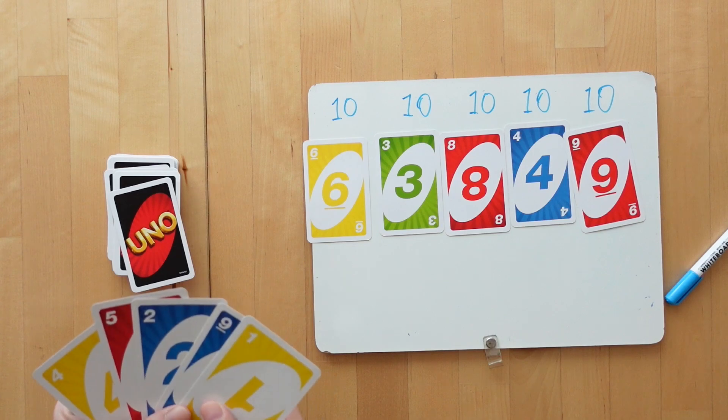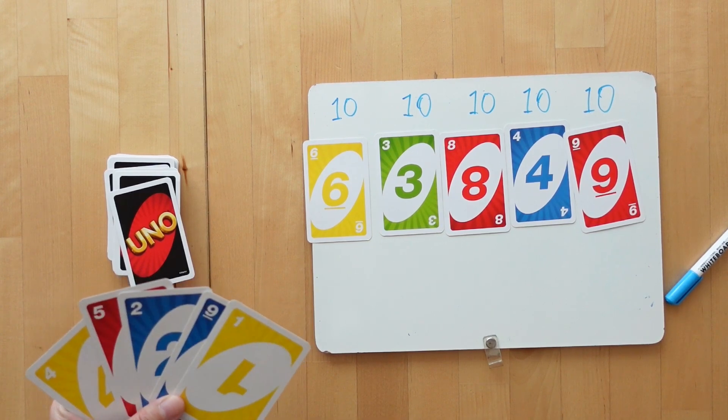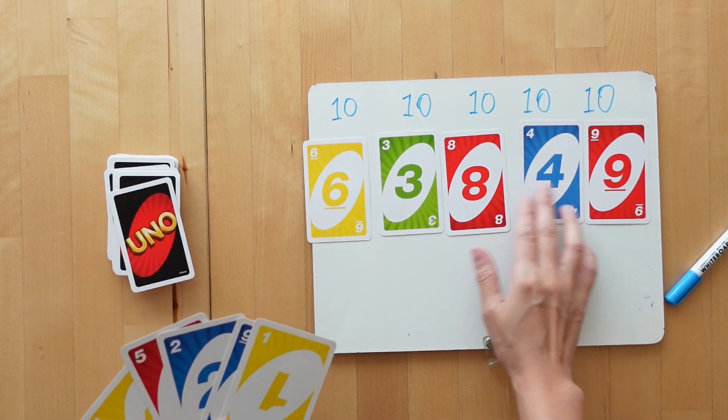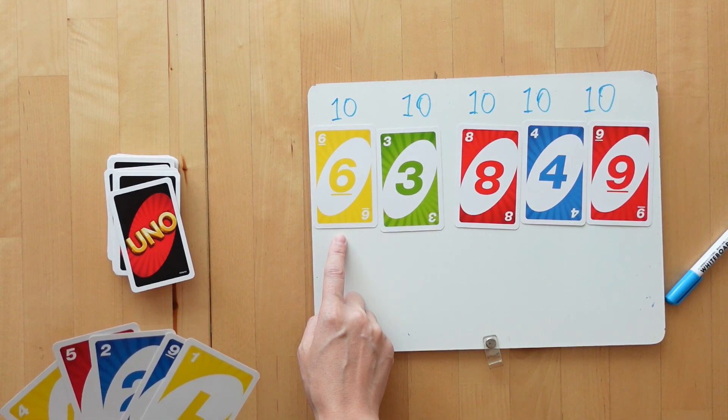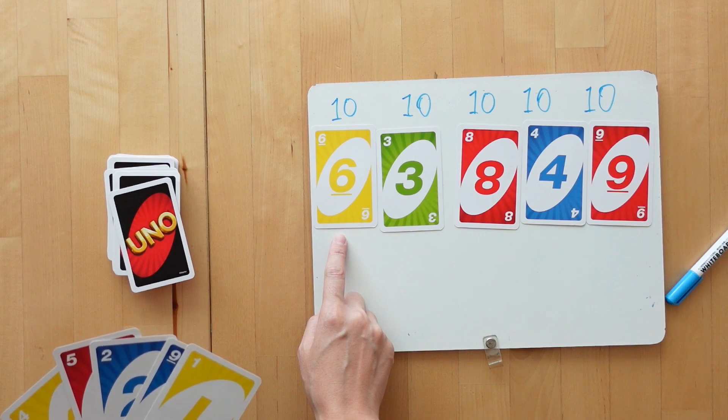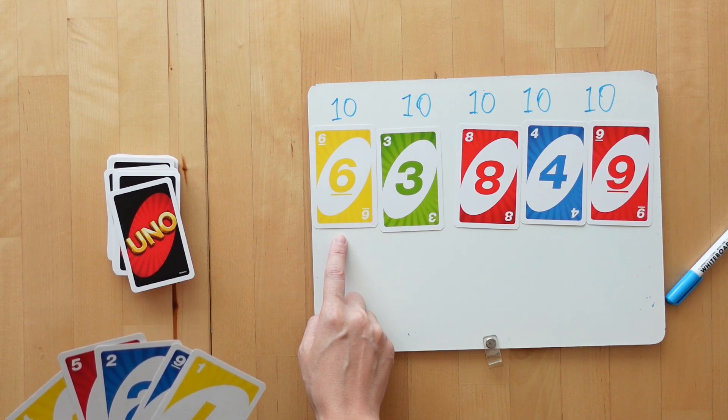On a player's turn, she checks to see if she has any cards in hand that make the differences. She'll have to first decide what is the differences needed in each column and then check to see if she has that in her hand.